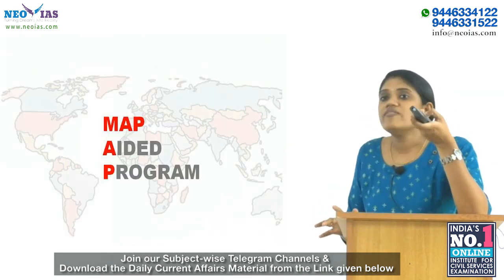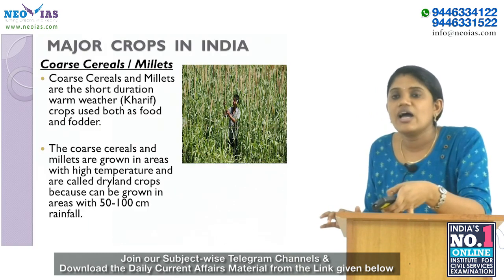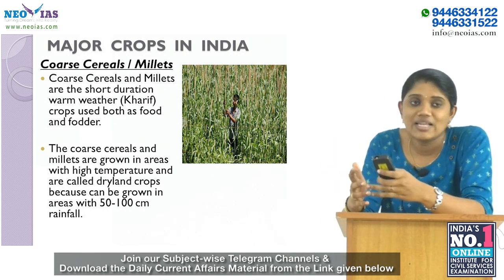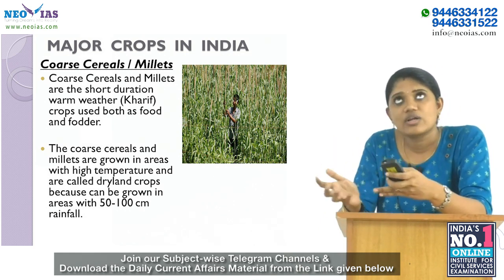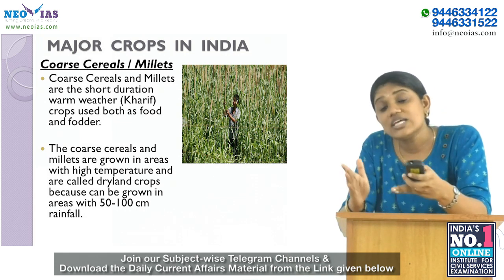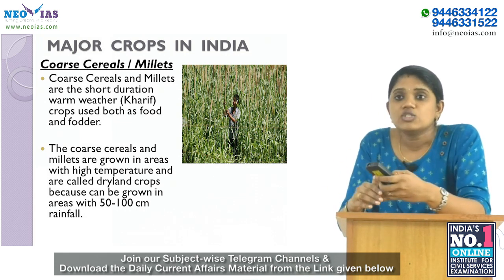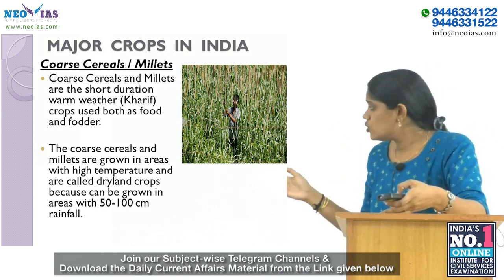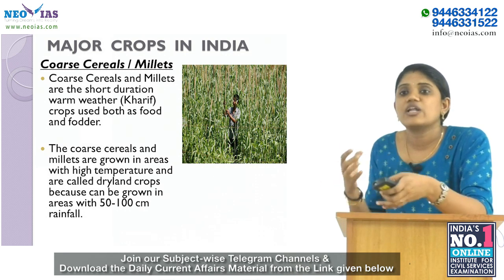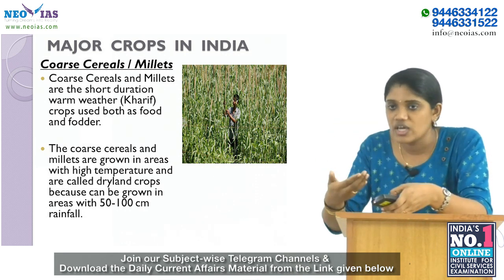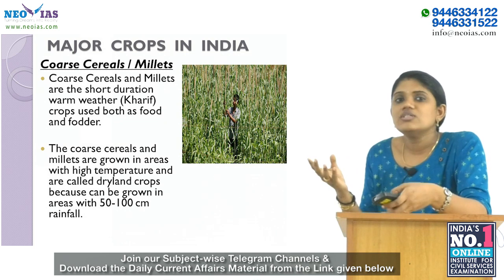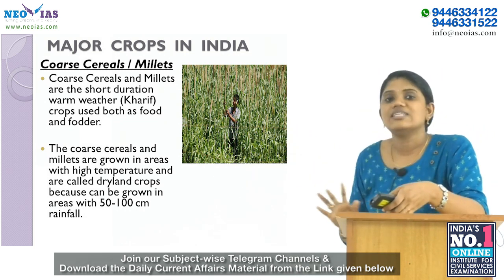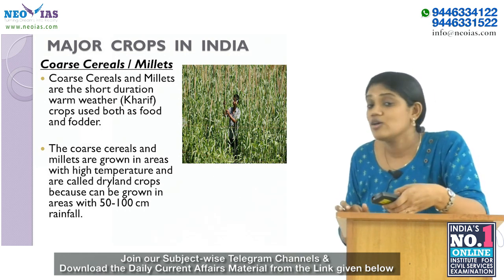In the MAPED program, we continue with major crops in India, focusing on coarse cereals or millets. Coarse cereals and millets are short-duration, warm-weather crops used both as food and fodder. They are grown in areas with high temperature and approximately 50 to 100 centimetres of rainfall, hence they are called dryland crops.